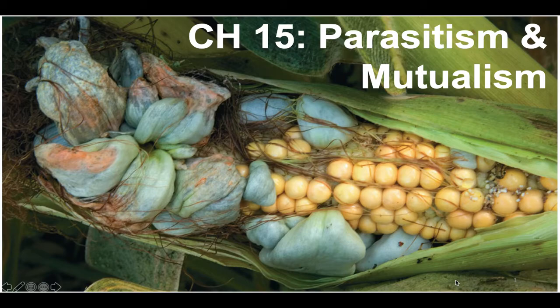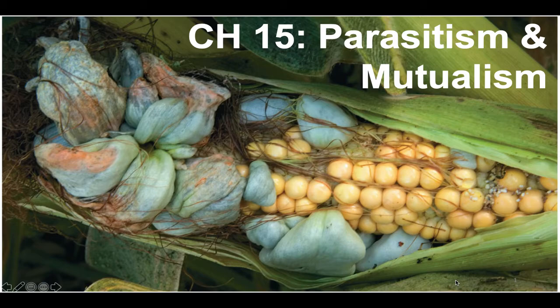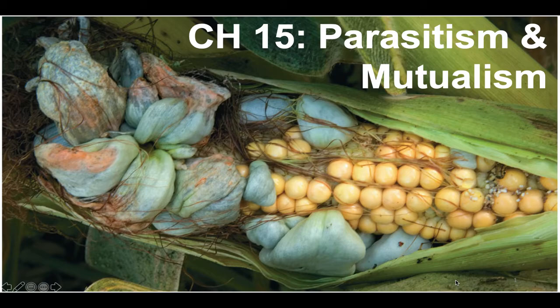Here's some nice corn smut fungus to start us off talking about parasitism and mutualism. If this were a normal semester I would have brought this to class for you to eat because it's a culinary delicacy and it's freaking delicious. It's got many names: corn truffle, corn smut, corn fungus. The name for it in Mexico is huitlacoche and you can buy it canned. It's got a delicious smoky flavor and it tastes good in salsa. Anyway, it's a parasite on corn.